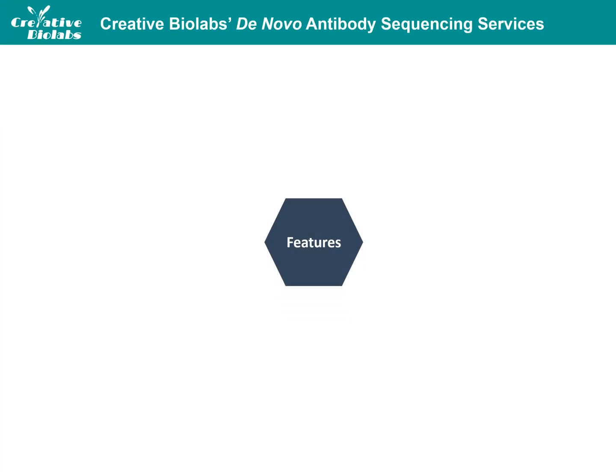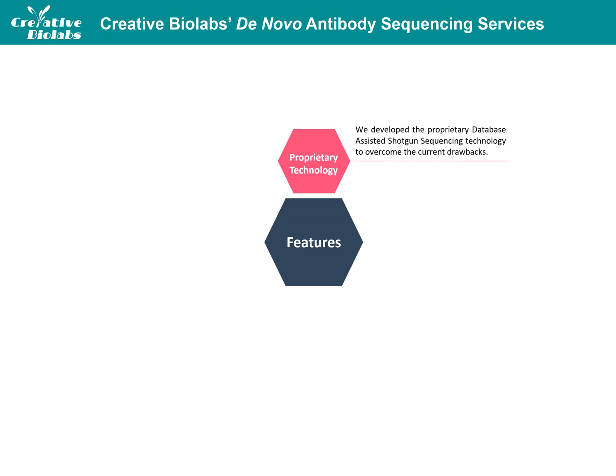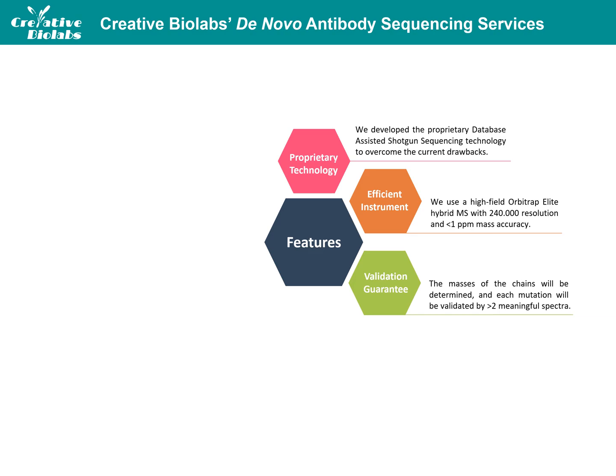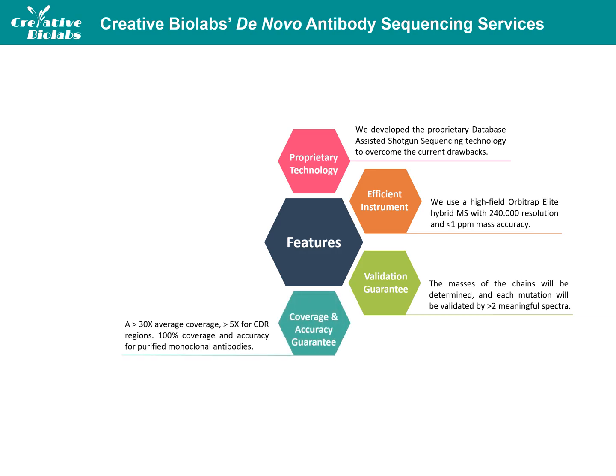Creative Biolabs provides professional de novo antibody sequencing services with the following features. We have developed proprietary database-assisted shotgun sequencing technology to overcome the current drawbacks of sequencing based on traditional methods. We use a high-field Thermo Scientific Orbitrap Elite mass spectrometry instrument with 240,000 resolution and less than 1 ppm mass accuracy. The masses of the reduced light and heavy chain will be determined to validate the sequences, and each mutation in the antibody will be validated by at least 2 MS/MS spectra. We guarantee greater than 30x average coverage — on average, each amino acid of the protein is covered by 30 or more distinct overlapping peptides.